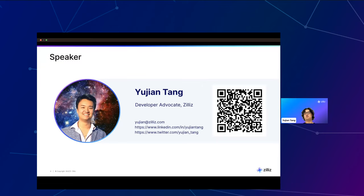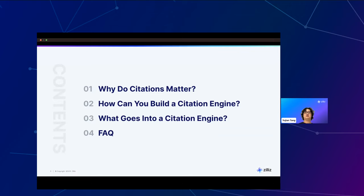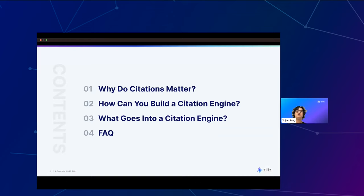My background is in machine learning. I worked with computer vision and natural language processing before coming to Zillus. Most of what I do here is focus on building retrieval augmented generation applications. Today we're going to cover a couple things about citations: why do citations matter, how you can build a citation engine, what goes into a citation engine, some FAQs about vector databases, and a code example we'll walk through — a proof of concept for a citation engine.